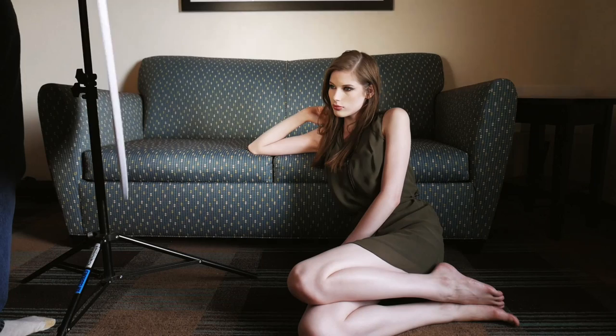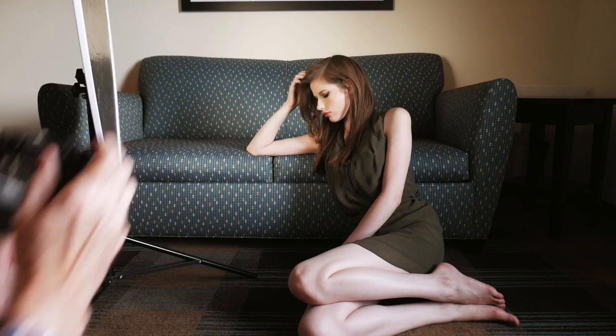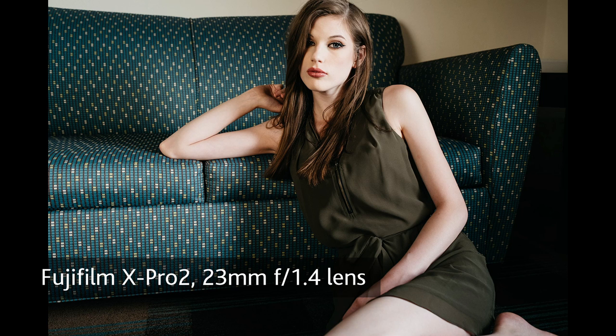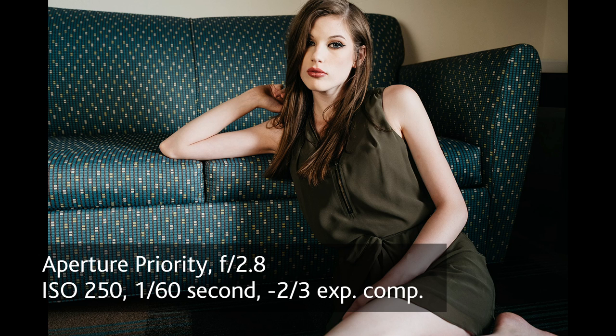Then I turned the reflector over, since it has a different color on the other side — a half-gold, half-silver pattern. This is a very shiny surface, so you get a lot of harsh light coming off it. I don't think it works terribly well indoors because you're not expecting to see harsh warm light inside a room. You have a few fill light options: flat white, silver, gold, or a combination. Because this is half gold and half silver, it cuts the warmth effect in half — something to think about when deciding what colored light works for your scene.